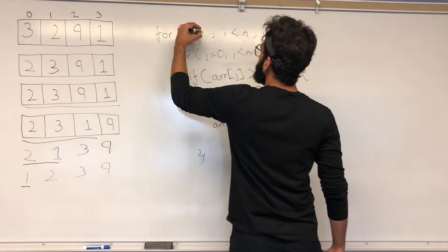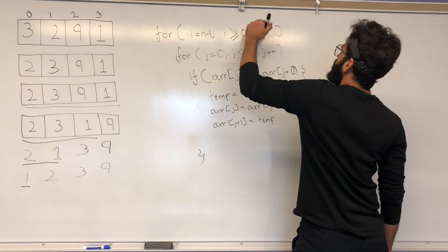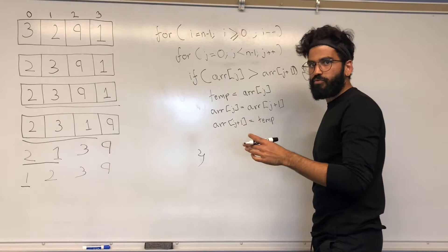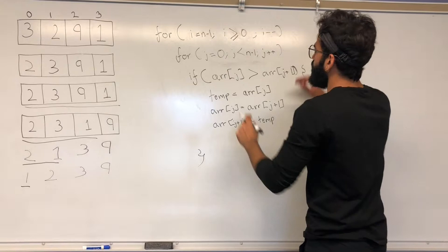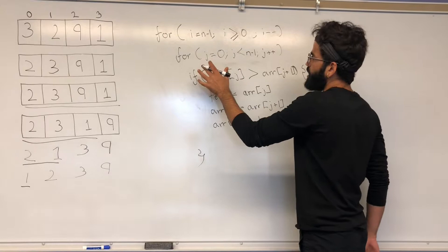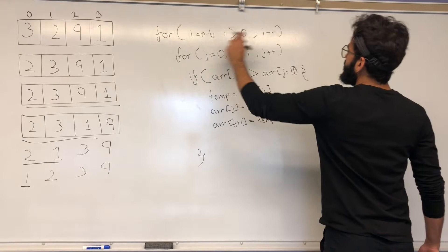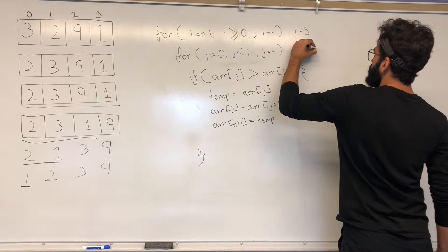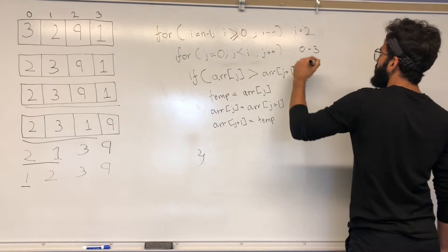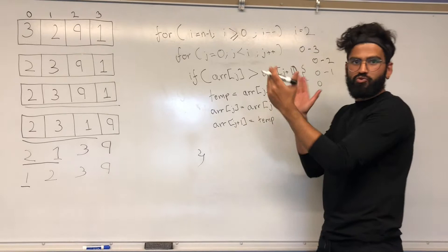To implement this, we have i start from n minus one and decrement. Now j goes from zero but only up to i instead of n minus one. In the beginning i is three so j goes from zero to three; then i decreases to two so j goes zero to two, then zero to one, then zero. This means j iterates through smaller portions of the list each pass, which is exactly what we want.